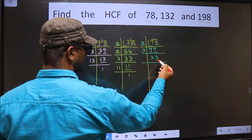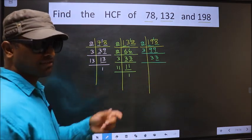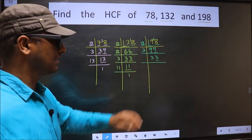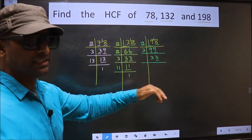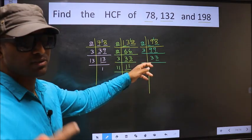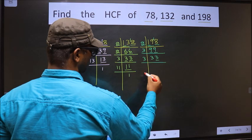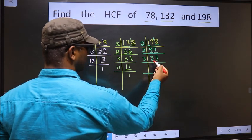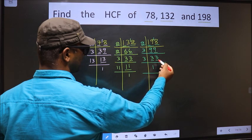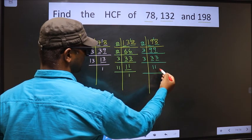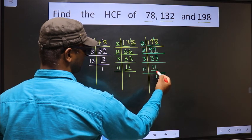Here last digit is 3, not even, so not divisible by 2. To check divisibility by 3, we add the digits: 3 plus 3 is 6. Is 6 divisible by 3? Yes. So this number is also divisible by 3, so we take 3. The first number 3: 3 once is 3. The other number 3: 3 once is 3. Here we got 11. 11 is a prime number, so 11×1 is 11.